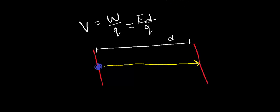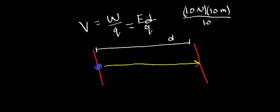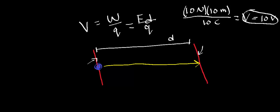For example, let's say I had to apply a force of 10 newtons over a distance of 10 meters — newton-meters are units of joules. If the charge is 10 coulombs, then the voltage difference between the two points is going to be 10 volts. So voltage is measured in volts, and it represents the work done to move a charge from one point to another in an electric field.